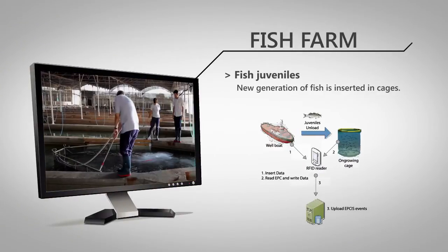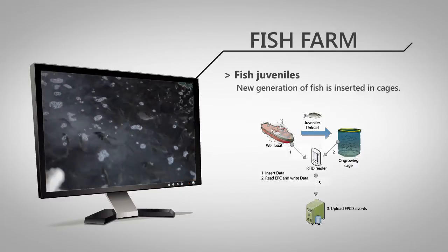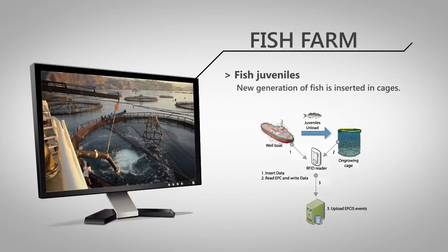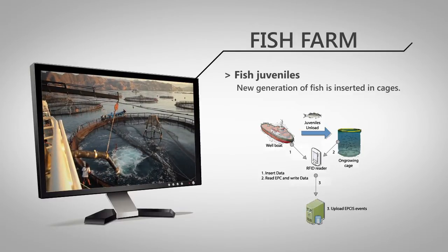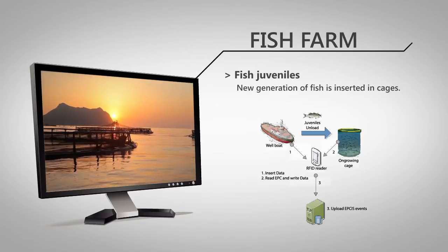First, juveniles are received. They are transported to the farm by boat. Then, juveniles are transferred directly through growing cages. The handheld RFID reader is used to identify the cage and to insert the type of fish and lot.